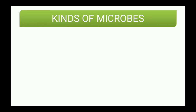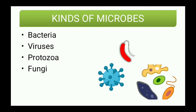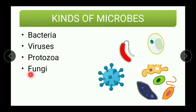Today we are going to learn the kinds of microbes. There are four kinds: first is bacteria, second is viruses, third is protozoa, and fourth is fungi. As shown here, bacteria, viruses, protozoa and fungi each have various shapes — I have picked some peculiar types, but there are other shapes for these microbes as well.